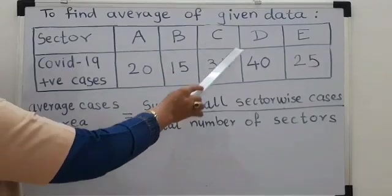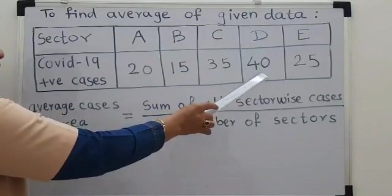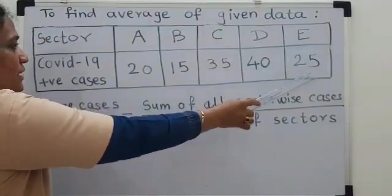In sector C, 35 cases. In sector D, 40 cases and in sector E, there were 25 cases.